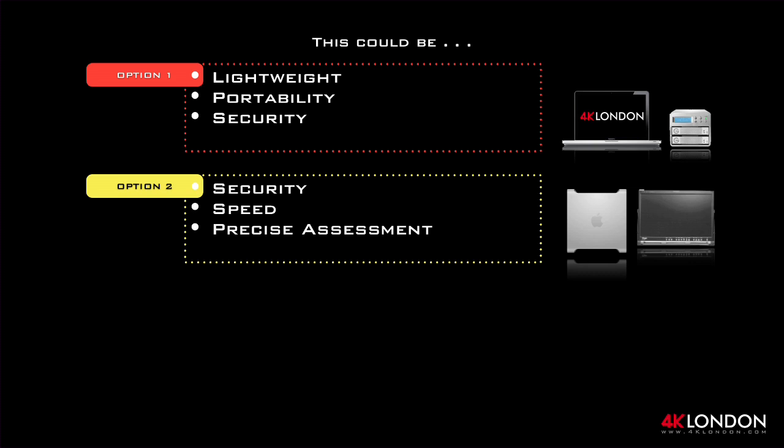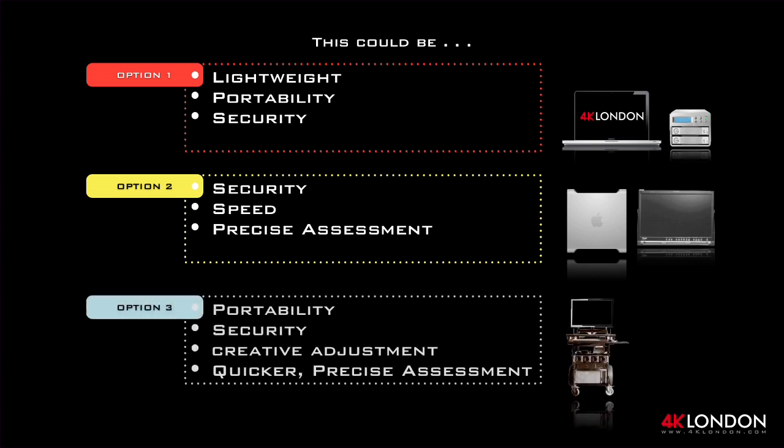The real advantage of the tower over the laptop is the ability to not only securely back up your raw media but to quickly deliver transcodes to your deliverable format. A larger monitor allows the DIT to do a more precise analysis of the raw image. Option 3 is the next level, giving you more creative control by using an on-set colour management tool such as TrueLight Onset in conjunction with a calibrated 10-bit Grade 1 monitor. This allows the DOP to utilise this as a tool for lighting and achieve their desired look, and would normally be used at the higher end of the film and commercial market.